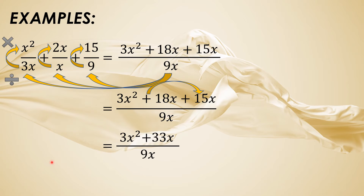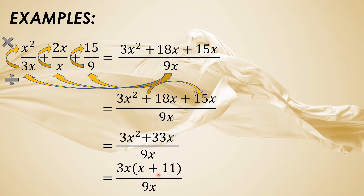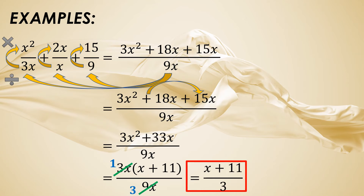Next is to get the common factor of the numerator. Since kayang i-divide ang 3x squared at 33x sa 3x, let us get that common factor — which is 3x. 3x times x is 3x squared, and 3x times 11 is 33x. Then copy the denominator 9x. Kaya natin i-divide ang 3x at 9x — let us cancel 3x. So 3x divided by 3x is 1, and 9x divided by 3x is 3. So the final answer is x plus 11 over 3.